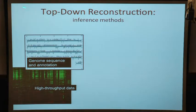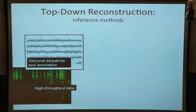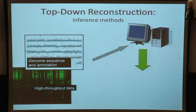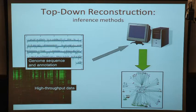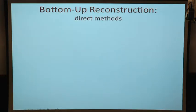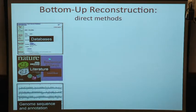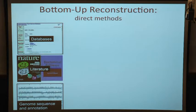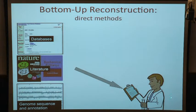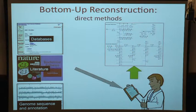In top-down reconstruction, everything begins with the genome — you can't do these reconstructions well at all unless you've got a genome sequence. You take high-throughput data, feed it through some computational algorithm, and out comes a network. For bottom-up, you go through online databases that have large assemblies of information, go through the literature to identify as much information as you can, look at the annotation of genomes, and that typically goes through an expert curator to build out a large-scale network.